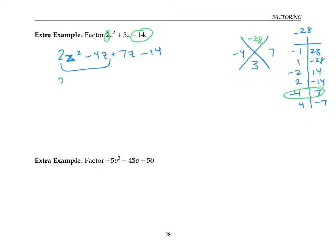Now factoring by grouping, pull out a two z, that becomes z minus two, pull out a seven, and that becomes z minus two. Again, looking good. I've got two z plus seven times z minus two as my factored expression.